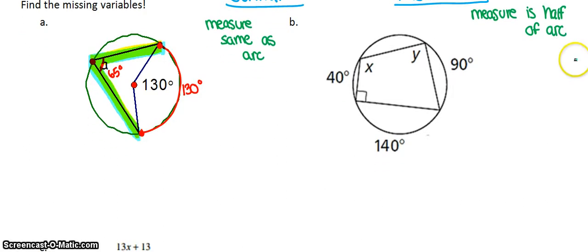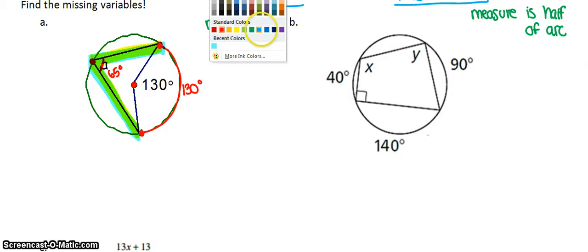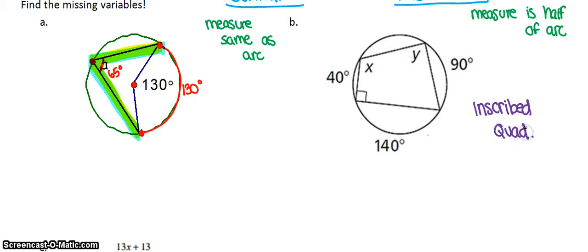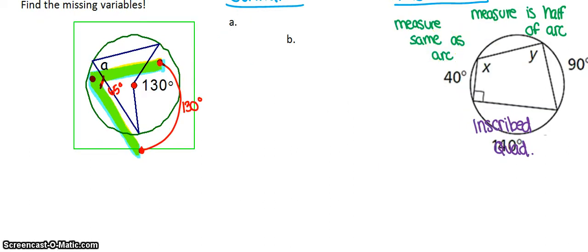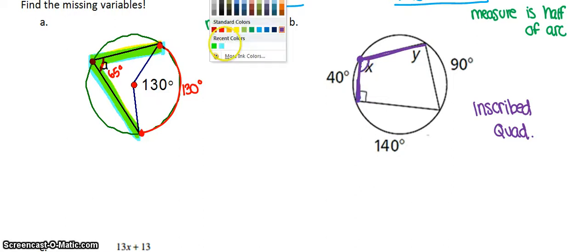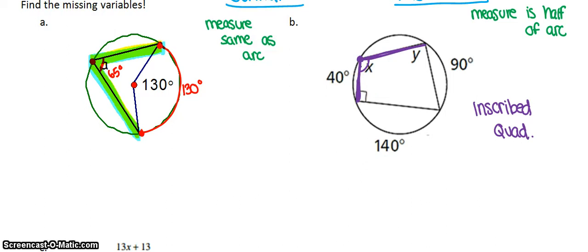Let's look at more complex examples. You can see a quadrilateral inside the circle — we call this an inscribed quadrilateral, because it's made up of inscribed angles. For example, angle X is an inscribed angle because its vertex is on the edge of the circle. You have to ignore the rest of the quadrilateral and focus on just that one angle.